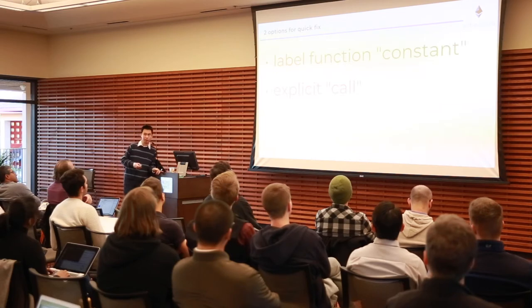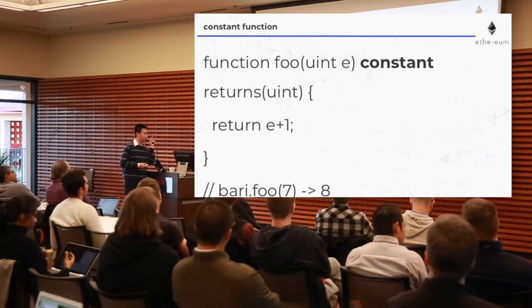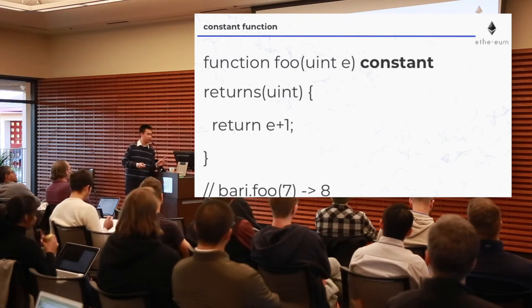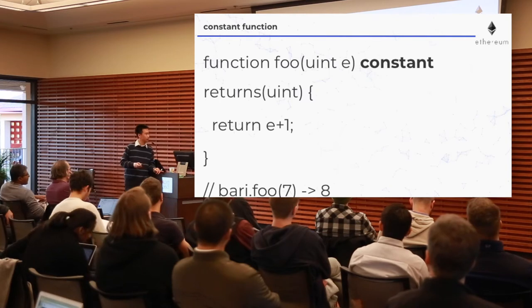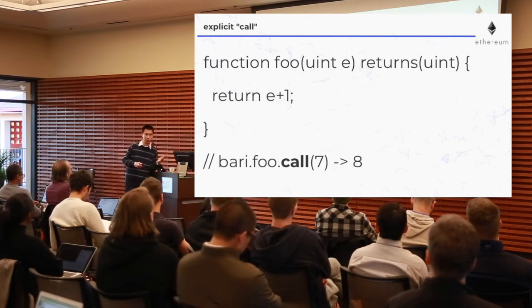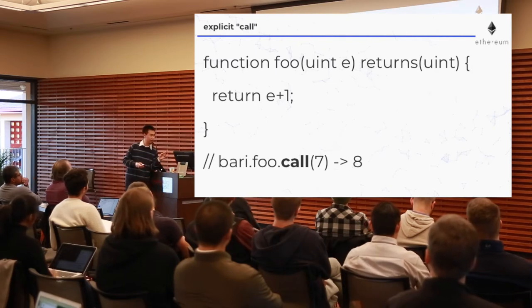Part of this talk is to warn you: don't start puzzling over why your code isn't returning eight. There are two quick fixes. The first: label the function 'constant' just before the return type. Now if you call barry.foo(7) in your console, you will get eight as expected. The second alternative: don't change the code, but change how you invoke it — instead of barry.foo(7), you do barry.foo.call(7). With that, you'll get eight as expected.